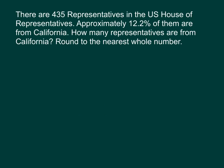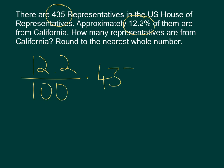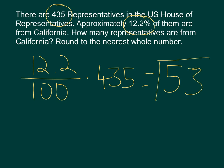Question eight says there are 435 representatives in the U.S. House of Representatives. Approximately 12.2% of them are from California. How many representatives are from California? Round to the nearest whole number. We can't have half a person, so rounding makes sense. Like all the other problems, if we want to find the percent of a number, we take that percent and multiply it by the number. I get 53.07, and rounding to the nearest whole number, I get 53, which is the number of representatives from California.